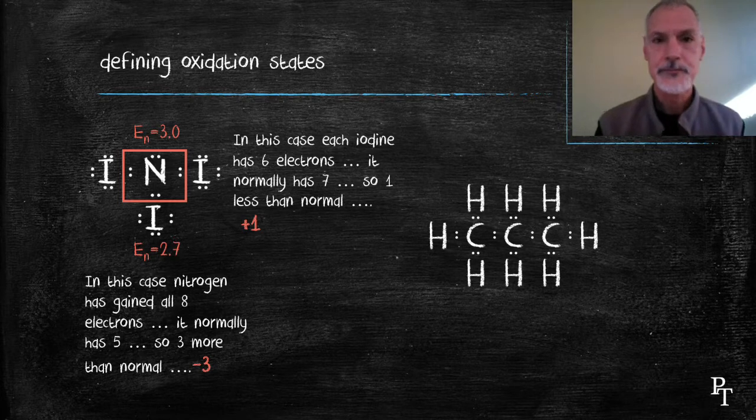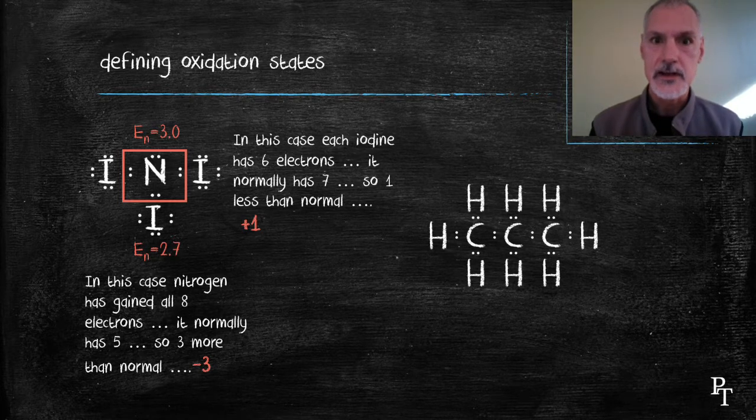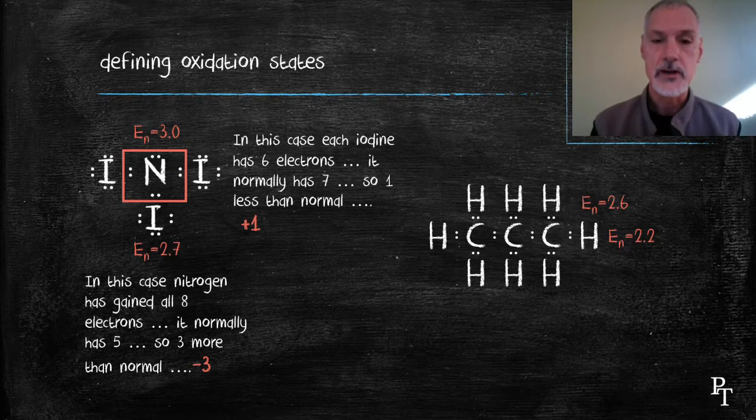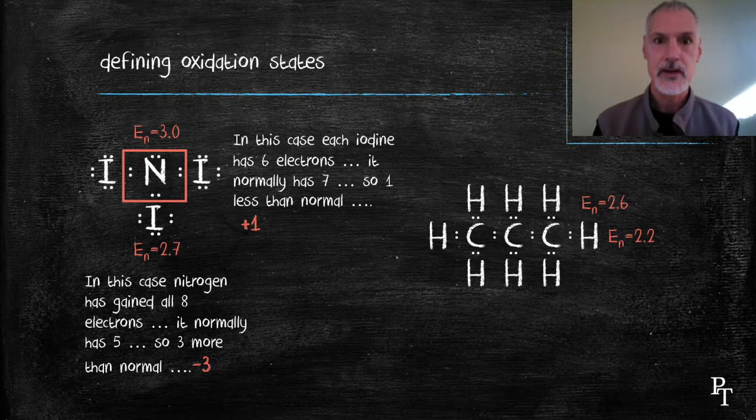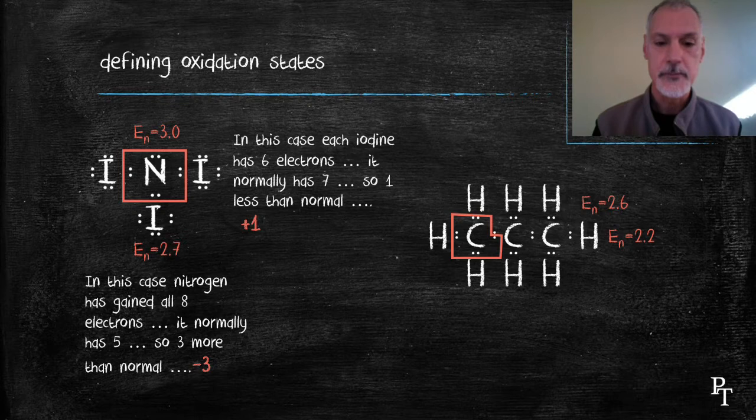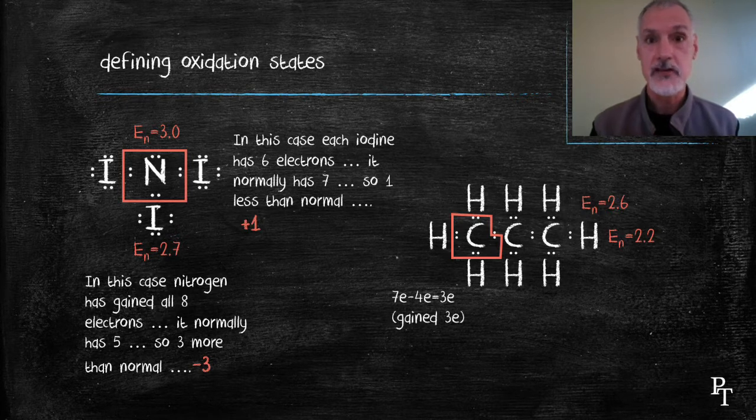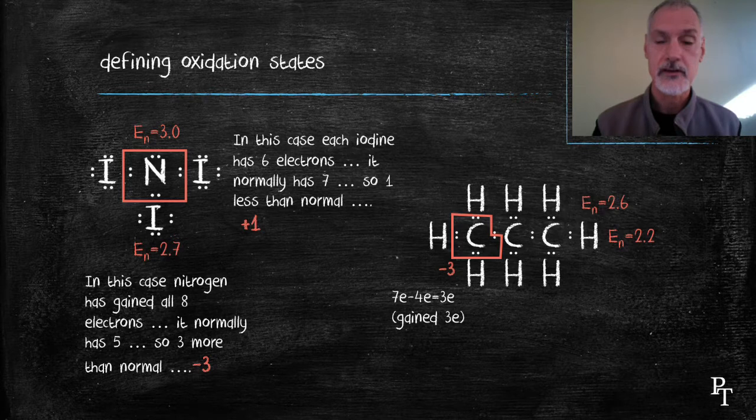Propane is my next example. Again, I look at their electronegativities. Carbon's is slightly higher than hydrogen's, so carbon should grab hydrogen's electrons. Here I've drawn a rectangle around the electrons it's captured. We can see one of the problems, though, is that with the carbon, there's a tie. So it doesn't capture both electrons. It has to share it with the neighboring carbon. As a result, it has only seven electrons. It should normally have four, capturing only three electrons. As a result, its oxidation state is minus three. And similarly, the carbon on the other end of the molecule has a charge of minus three.